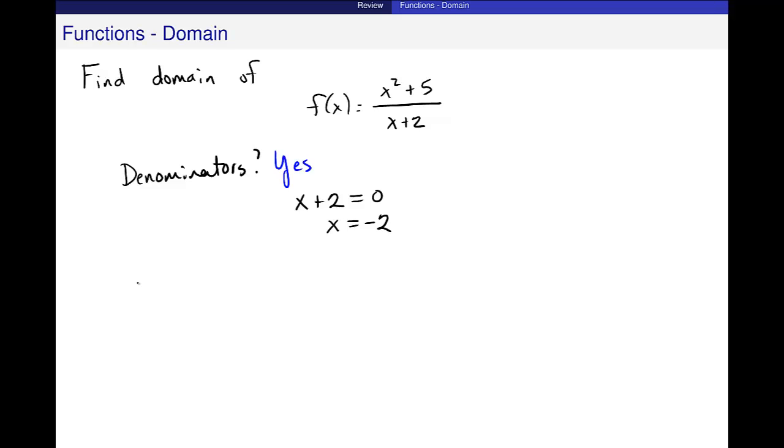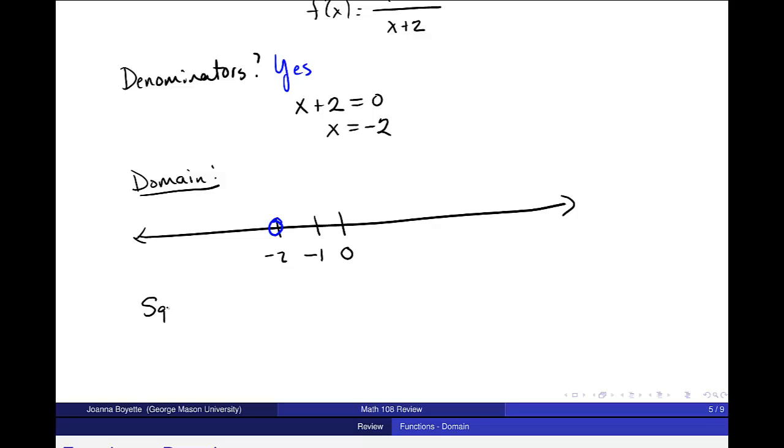So when I talk about the domain of this function then, I have this entire real line. Sorry, the negative 2 is a little bit too far. And that I have to remove, and I remove that from the domain by an open circle. And then I continue to go down the list. For example, are there any square roots? In this case, there are no square roots in my function. And it's not an application. So really, I just have this one point that needs to be removed. And the rest of this is the domain of this function.